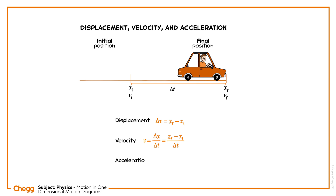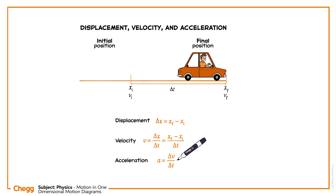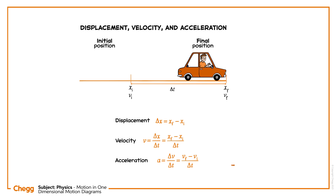The acceleration a of the car is the change in velocity delta v of the car in the time interval delta t. That is, a is equal to delta v divided by delta t, which is equal to vf minus vi divided by delta t.